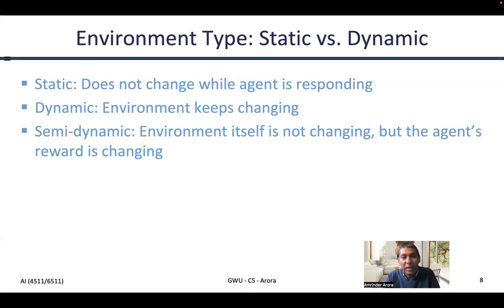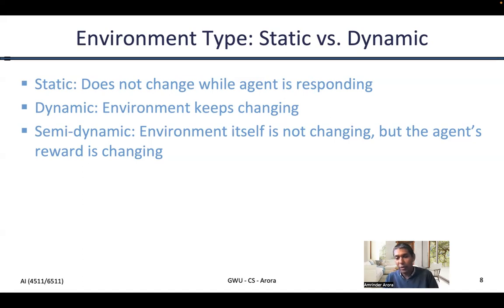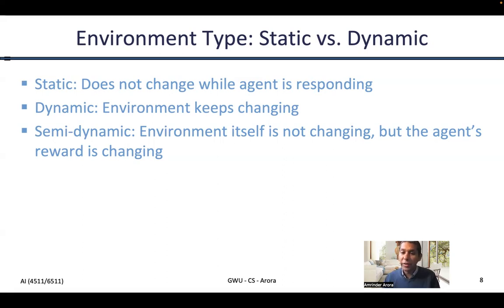It could also be that the environment doesn't quite change, but because time is passing the agent's reward is changing — we call such an environment semi-dynamic. A good example is a chess game where the board doesn't quite change, but if you take too long on a move and there are time rules — such as if you do not make your 40 moves in time, you already lose — then the agent's reward is going to change. Therefore the environment is set to be semi-dynamic.